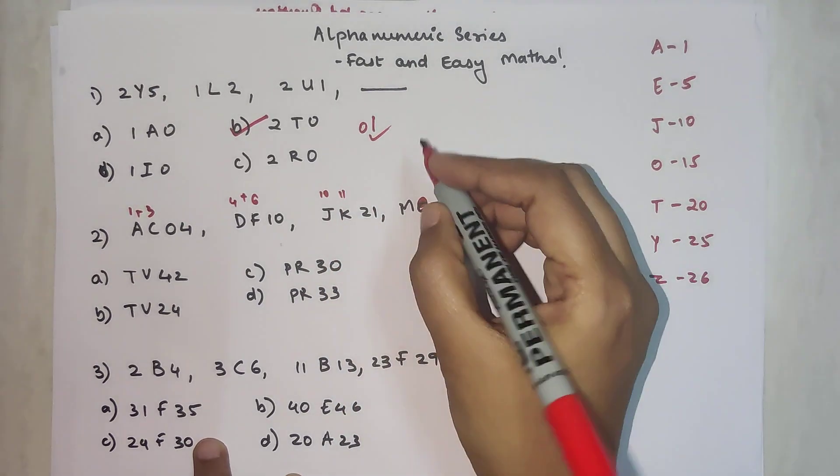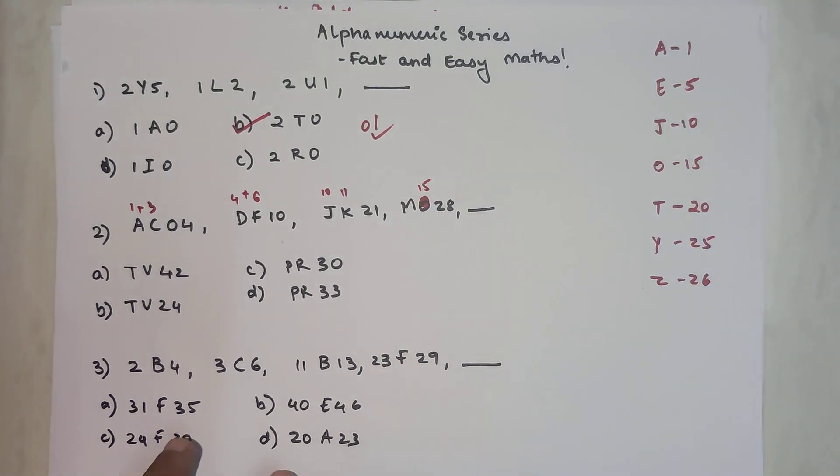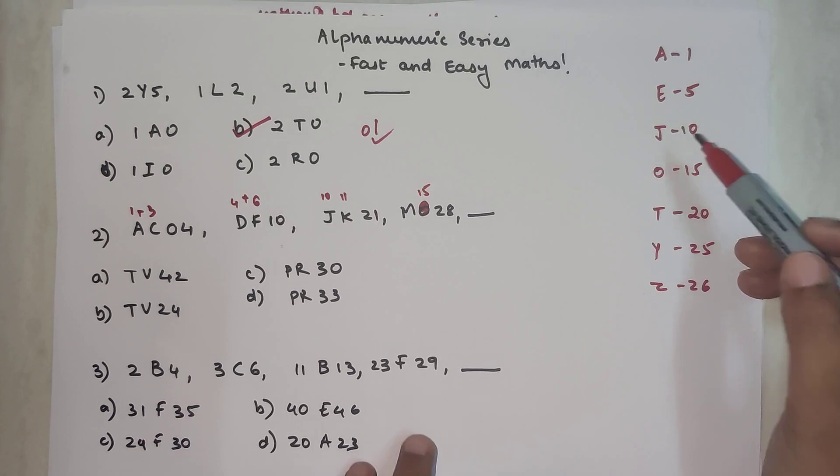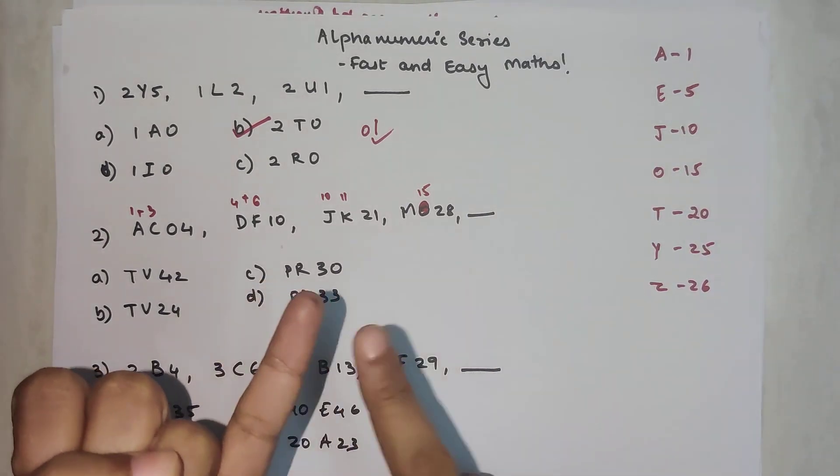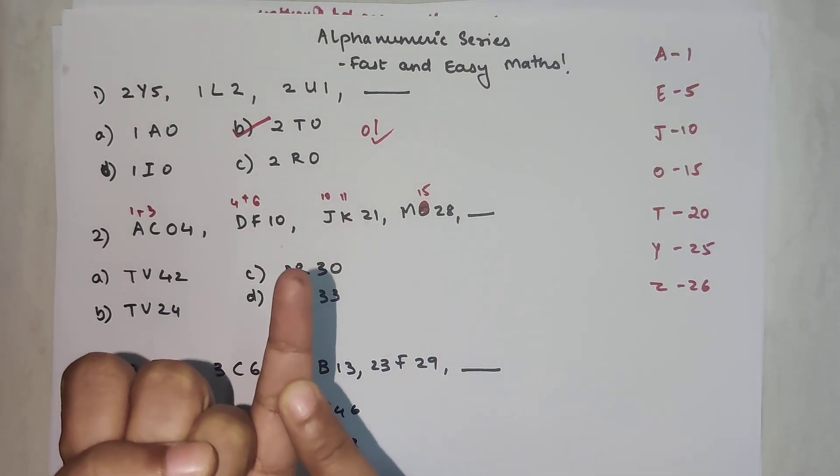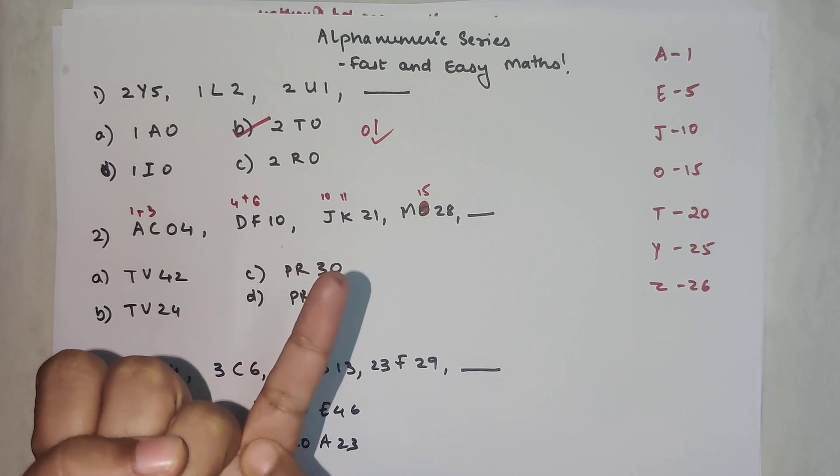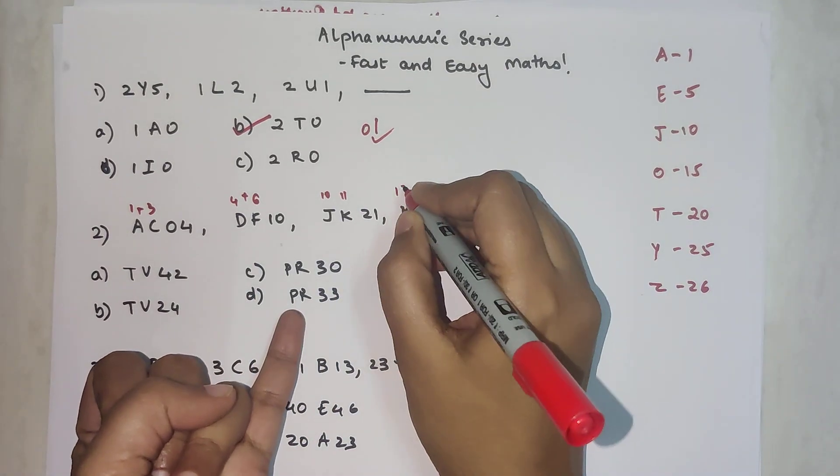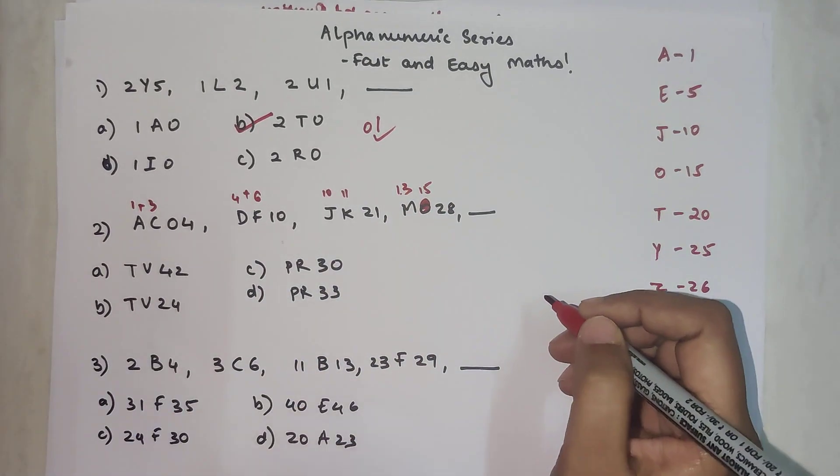O is fifteen. Now understand, how do you go to M? J is ten, so K is eleven, twelve will be L, M will be thirteen. When you add them you get twenty-eight.